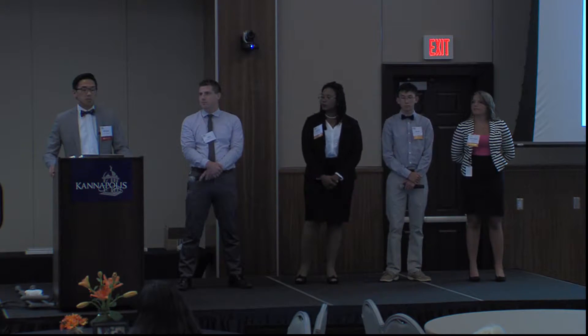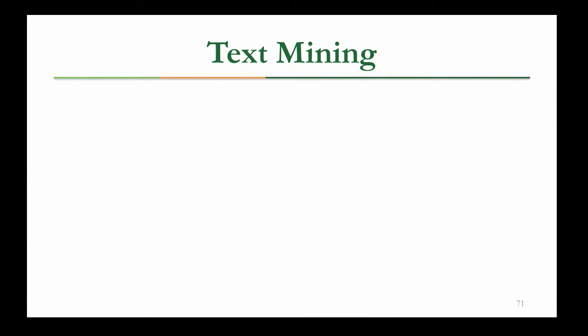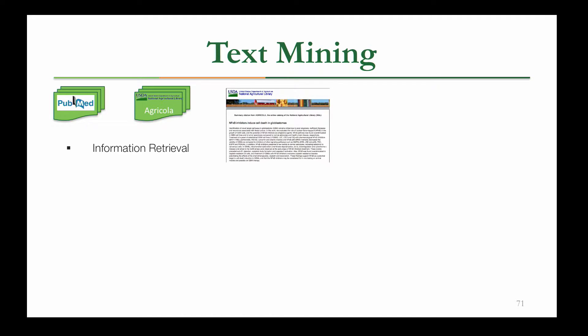Text mining can be broken up into four separate steps. The first is to define your document space — in our case, the citation databases PubMed and Agricola. The next step is information retrieval, which is akin to a Google search: you use phrases, keywords, or terms to search for documents of interest from your document source, and it returns a list of documents pertinent to your query.